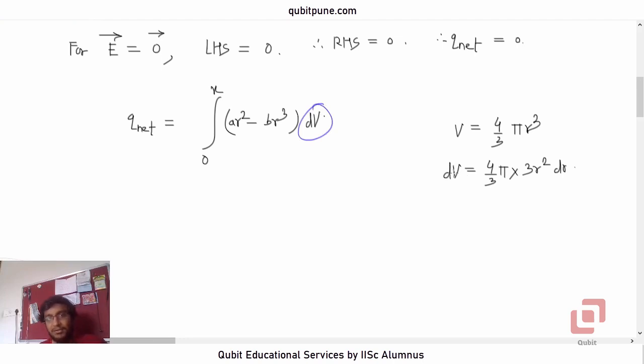So this dV now needs to be replaced by 4π/3 × 3r²dr. Three will get cancelled. What remains is 4πr²dr. Now 4π is a constant, write it outside. Integral 0 to x: ar² - br³ into dV, 4πr²dr.